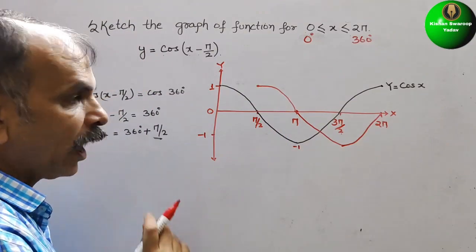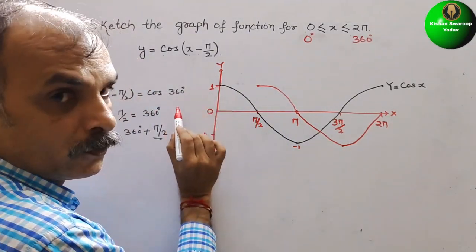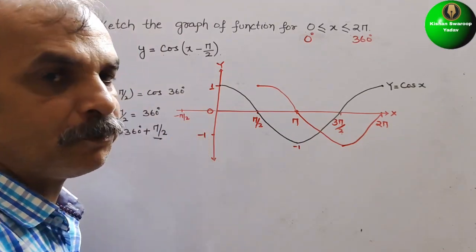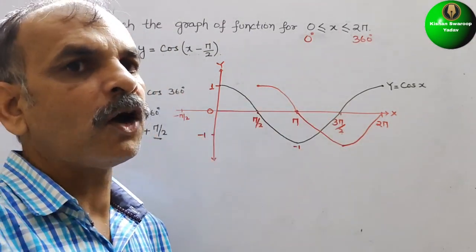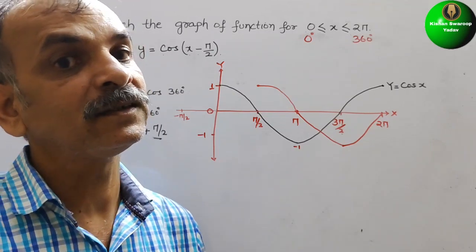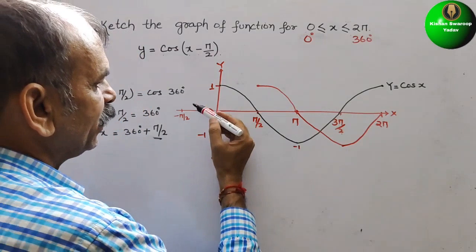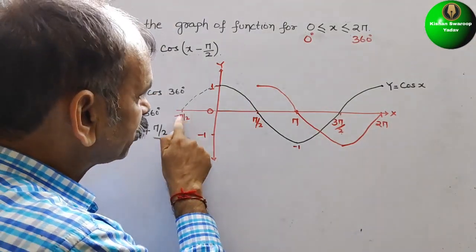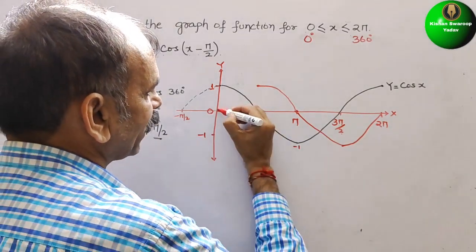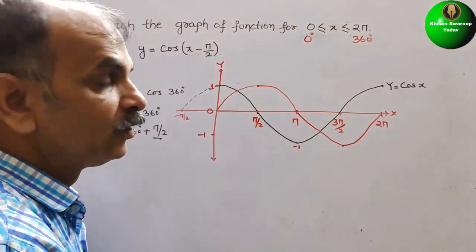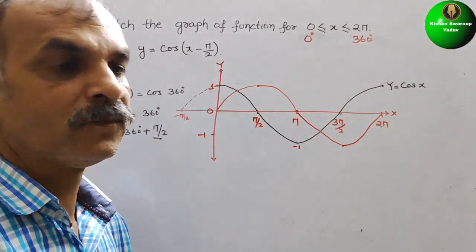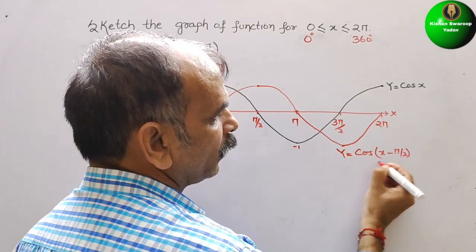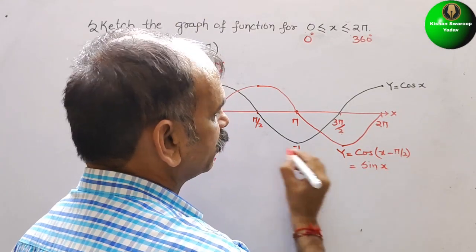We have to make the graph from 0. Looking at the original graph, if you go to minus π/2, which going clockwise is 270 degrees, the value is 0. So at x equals 0 the shifted graph starts at 0. This means the graph has shifted 90 degrees. Therefore the graph of cos(x minus π/2) looks just like the sine wave. So we can say y equals cos(x minus π/2) is equal to sin(x).